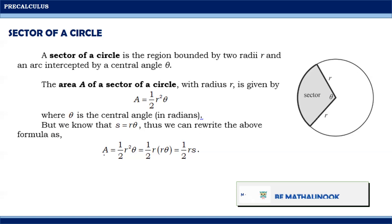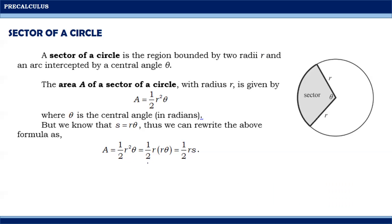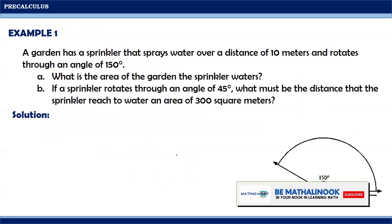We can also rewrite the formula as A equals one-half times r squared times theta. Factoring r times theta from r squared times theta, we get one-half times r times (r·theta), where r·theta is equal to s. Therefore we arrive at another formula for the area of the sector: A equals one-half r·s. You can use this second formula if you know the length of the arc.